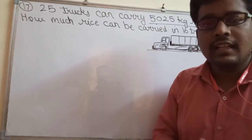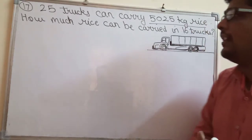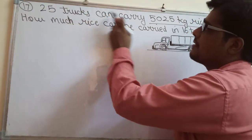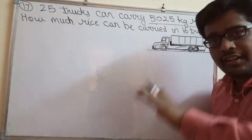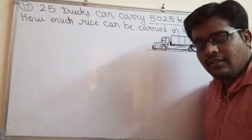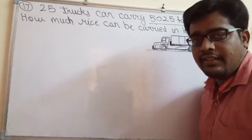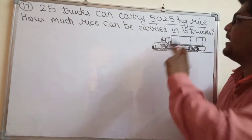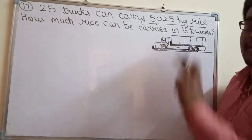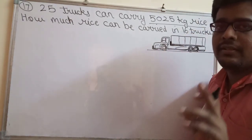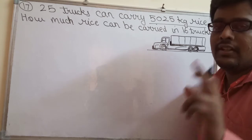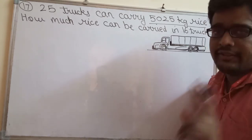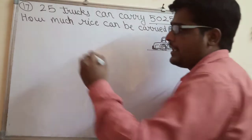What do we have to do in this method? First, we will find the weight carried by 1 truck from the 25 trucks. Then we will multiply the weight for 1 truck by 16 trucks. This method is called the Unitary Method. First we will find the weight carried by one truck.